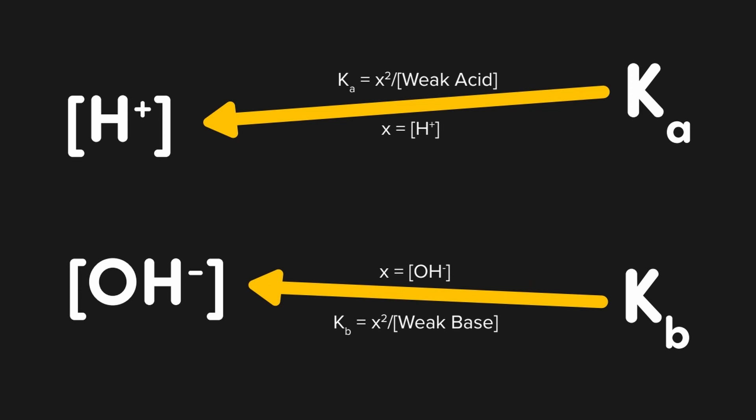And if we want to convert from Kb to hydroxide, then we would need the concentration of weak base. The important thing you have to realize here is that the given concentration of either weak acid or weak base will determine which path you take.